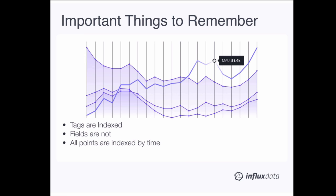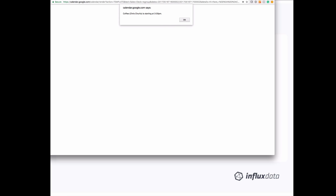Important to remember about the InfluxDB data model: tags are indexed, fields are not indexed, and all points are indexed by time. For each database instance of InfluxDB, there are databases inside it. Each database has many retention policies. Each retention policy has measurements, which are essentially tables in SQL. Within those tables, tags — which are indexed — are like indexed columns, and fields — which are not indexed — are like normal columns with data in them. Everything is indexed by time.